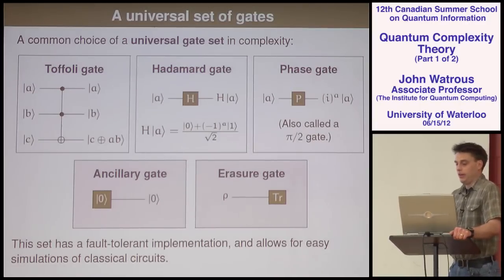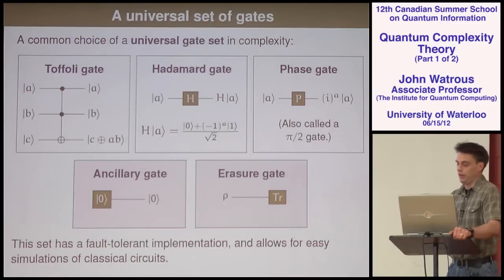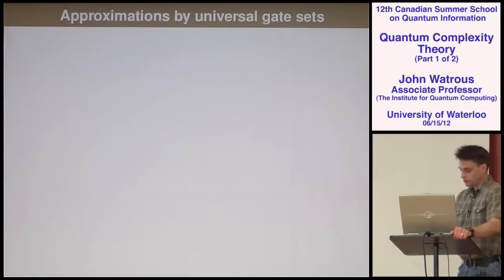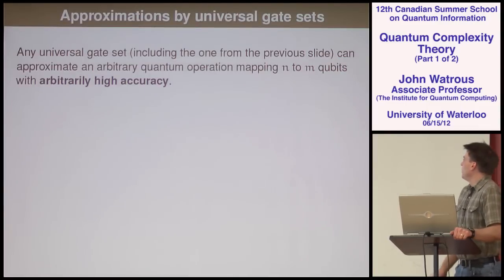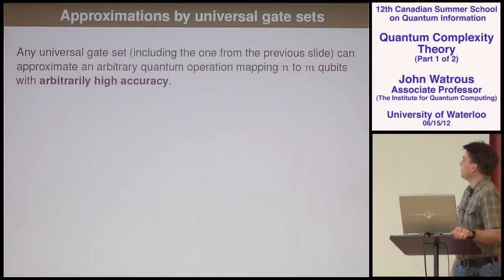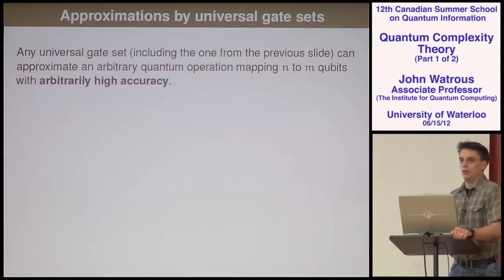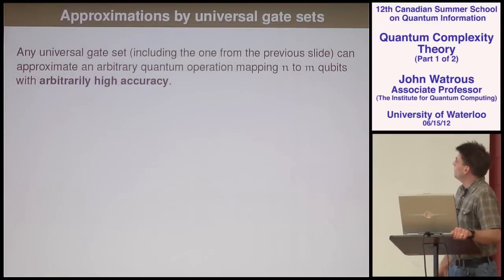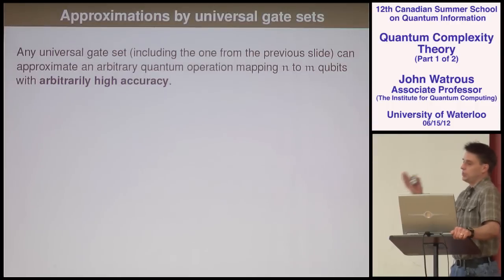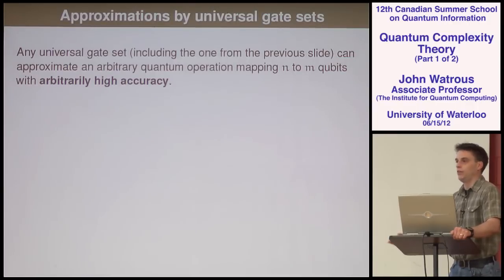This is a universal gate set, and any universal gate set by definition allows you to approximate arbitrary quantum operations with any accuracy you want. So for any quantum channel from n qubits to m qubits, you can build it out of circuits of those gates with as good accuracy as desired. In general, an operation mapping n qubits to m qubits could require an exponential number of gates — that's easy to prove using a counting and measure-theoretic argument. But the number of gates scales very well in terms of accuracy.